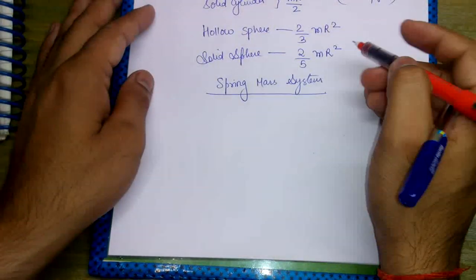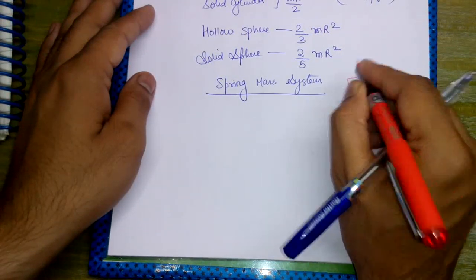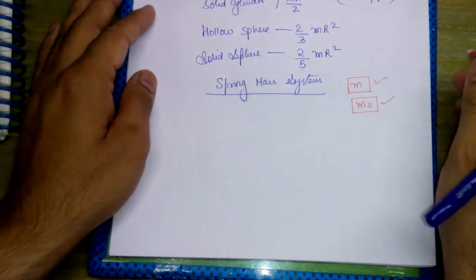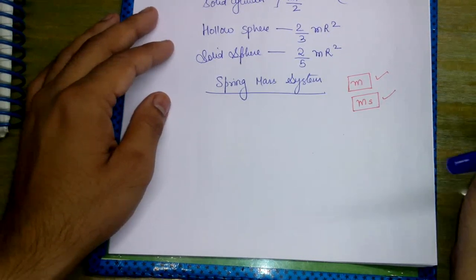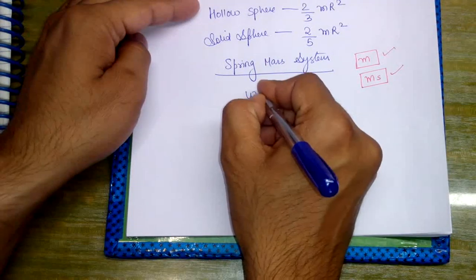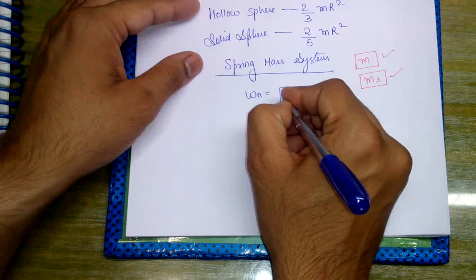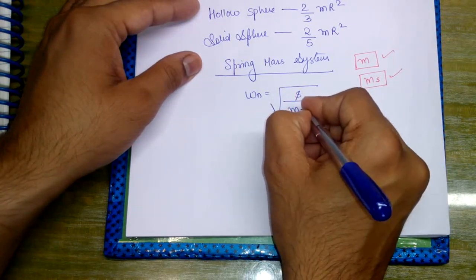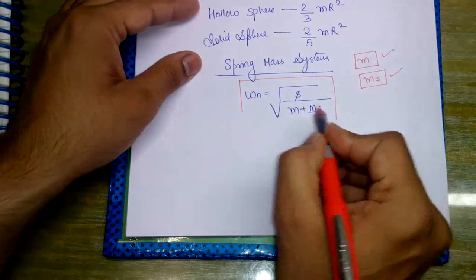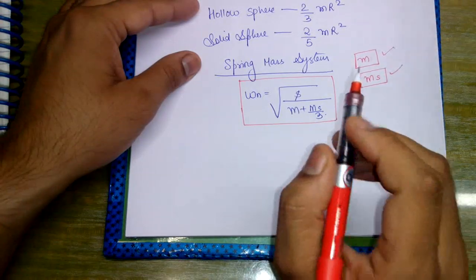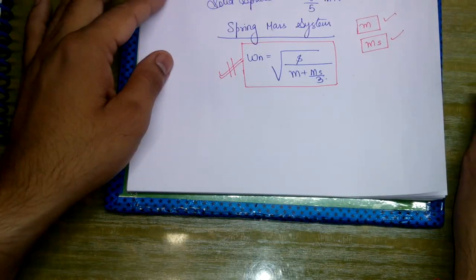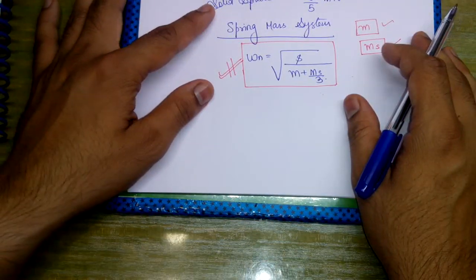Now consider a spring-mass system where the spring itself has a mass M_s. Rather than deriving the formula, the important result is: ω = √(S / (M + M_s/3)). We take one-third of the spring's mass and add it to the suspended mass in order to obtain the natural frequency of vibration for the system.